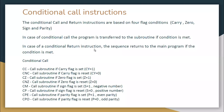In the previous video we saw subroutines where call and return statements were unconditional — when there is a call it goes immediately, and when there is a return, program control returns to the main program immediately. But we can also make conditional calls and conditional returns. Exclusive conditional call and conditional return instructions are available in the 8085.